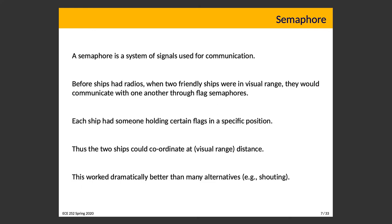What is a semaphore? A semaphore is a system of signals used for communication. The name comes from flags used by ships to communicate. Back in the sailing ship era, long before ships had radios, when two friendly ships were in visual range they communicated through flag semaphores — flags held in specific positions allowing them to communicate letters at a distance, enhanced with a telescope. This worked dramatically better than alternatives like shouting, especially on the high seas with wind, water, and cannon fire.